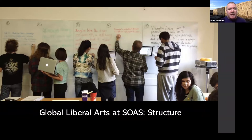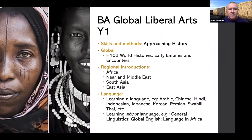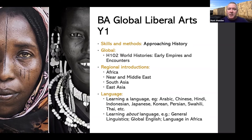I'm going to give you a quick introduction to the structure of the Global Liberal Arts degree, and then, as this is a taster session, give you a little extract — perhaps a quarter of a lecture that students got this year from year one. The degree is divided into four tracks: a skills and method track each year, a global track each year, a regional track each year, and a language track. In the first year, the skills and method track is Approaching History, situated in the department of History, Religions and Philosophies.